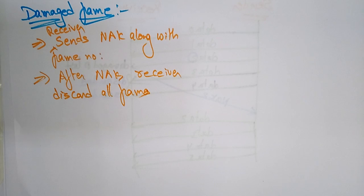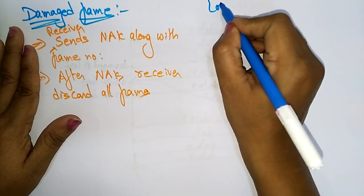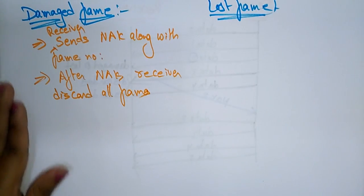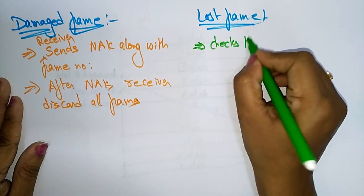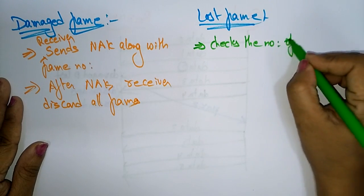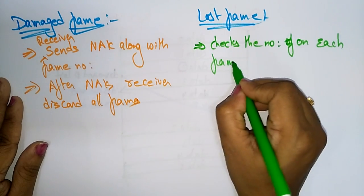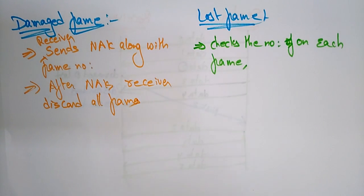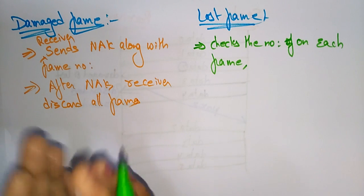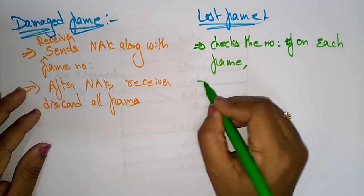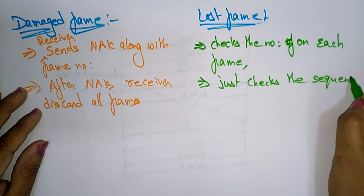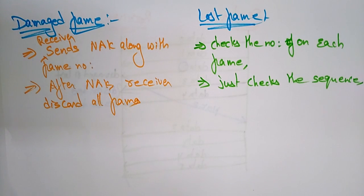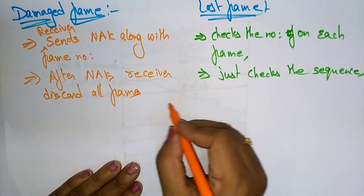For a lost frame, the receiver checks the number on each frame. If a frame number is skipped in the sequence, the receiver easily detects the loss of that frame. With the help of the newly received frame which is out of sequence, the receiver checks the sequence and, if a sequence number is missed, sends a negative acknowledgement.